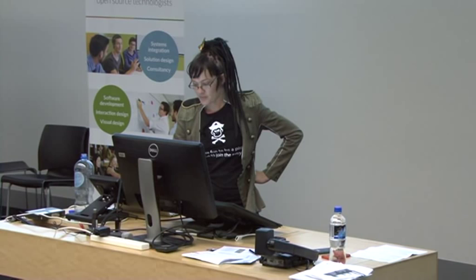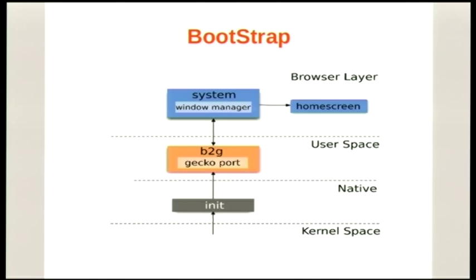Looking at the bootstrap: execution always begins at the primary bootloader. From there, a succession of increasingly high-level bootloaders are called. The general system boot-up flow goes from the bootloaders in kernel space to init in native code to B2G. It then spawns the system window manager and executes the home screen. All your applications then run within the home screen. They're isolated there, and every time the device runs, this process goes through. Home screen is called, and that's the process your apps are executed on top of.